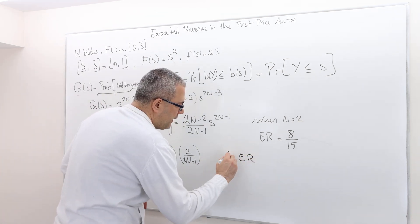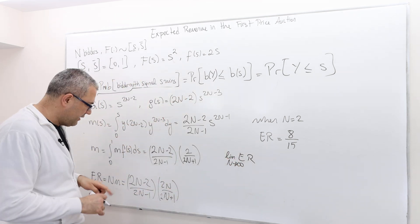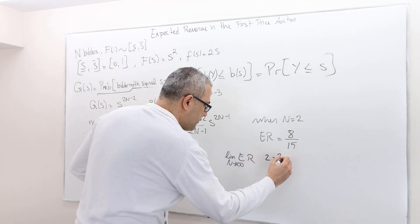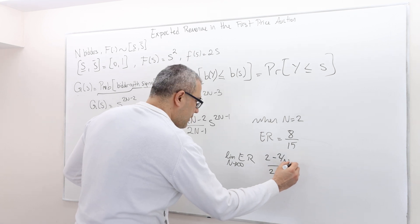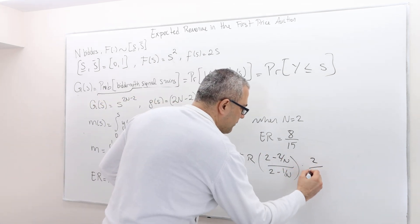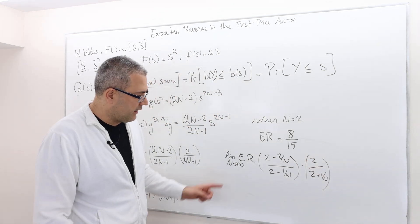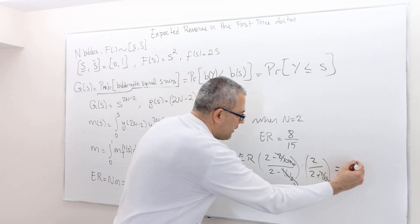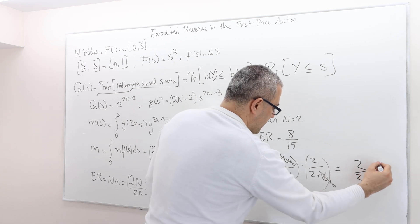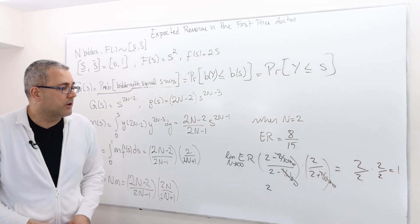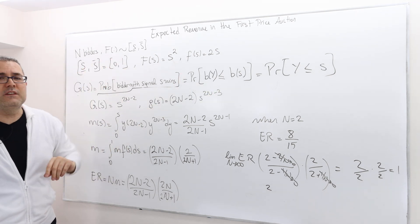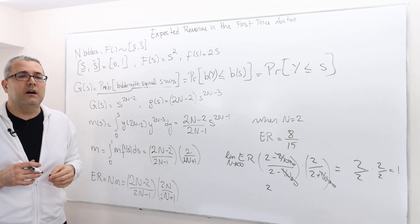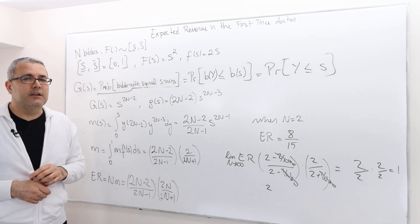What happens to expected revenue as n goes to infinity? Dividing everything by n, we get (2 - 2/n)/(2 - 1/n) times 2/(2 + 1/n). As n goes to infinity, the 1/n terms go to 0, so this becomes 2/2 times 2/2, which equals 1. So as we increase the number of bidders to infinity, the expected revenue of the seller approaches 1 — the more bidders there are, the higher the revenue the seller should expect.